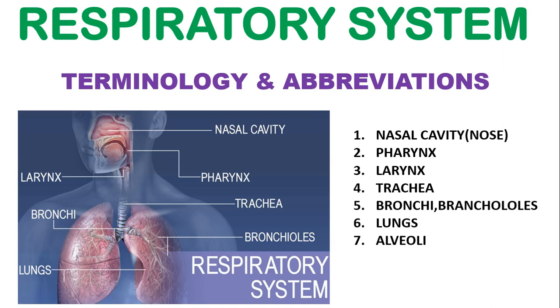First, let's look at the parts of the respiratory system: nasal cavity, which is the nose; pharynx; larynx; trachea; bronchi or bronchioles; lungs; and alveoli. Let's start with the nasal cavity, which means nose.